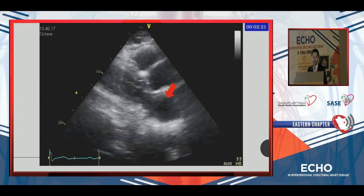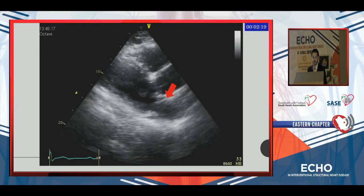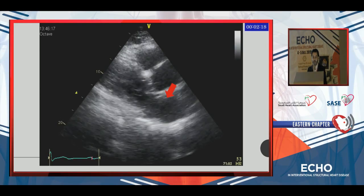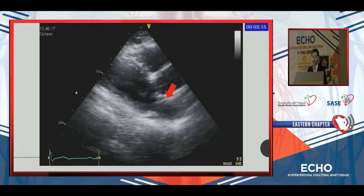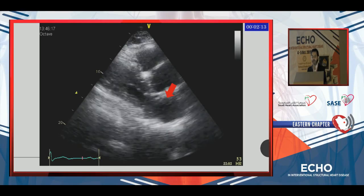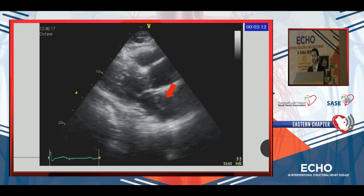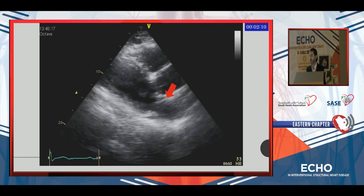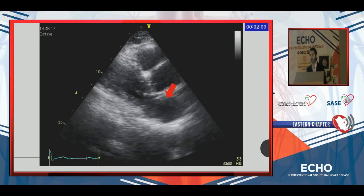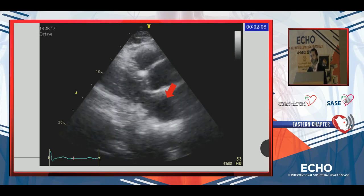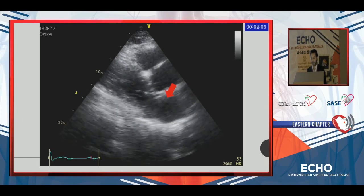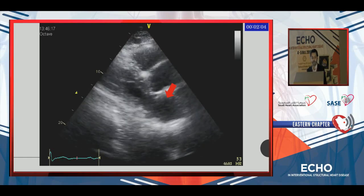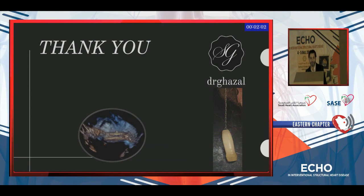I'm almost done — this is my last slide. Do you know what this is? The circular structure in the left atrium — this is an atrial septal aneurysm. If you look at it from an en-face view, it will look like this. Thank you very much.